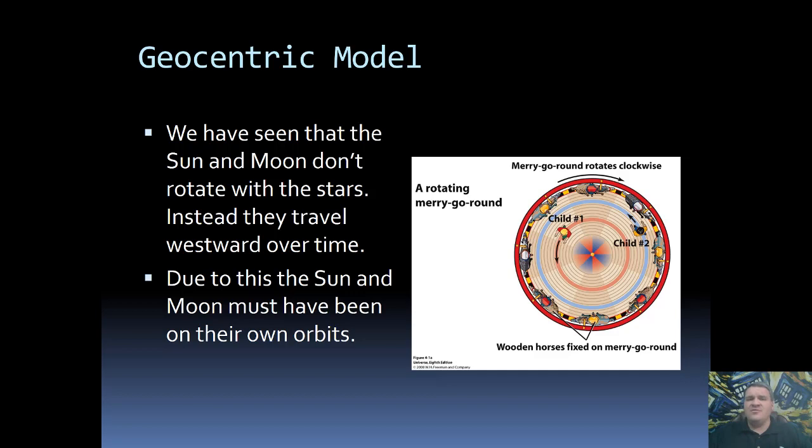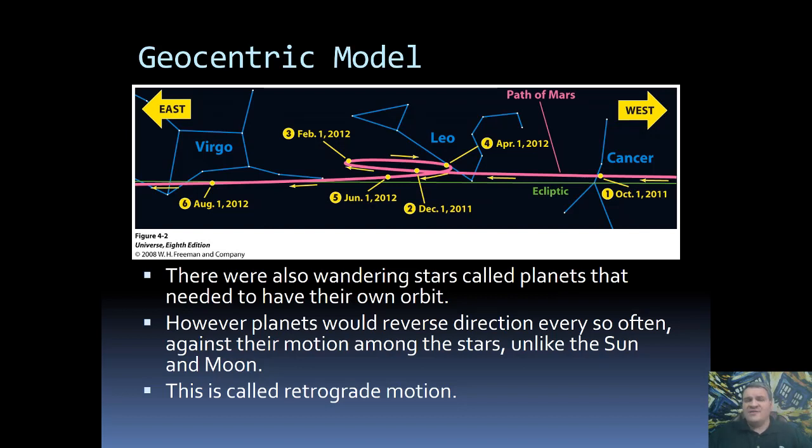And again, they tend to move eastward from one night to the next. And while the ancients were studying the sky, they noticed that there were other things that also moved. Now, these things looked like stars, but they moved compared to the other stars. So they referred to these as wanderers. In fact, the term that we now have planet comes from the ancient Greek word for wanderer. So we have these wandering stars that would move compared to the other stars. Now, generally, these would move in the same way as the Sun and Moon, generally traveling eastward from one night to the next.